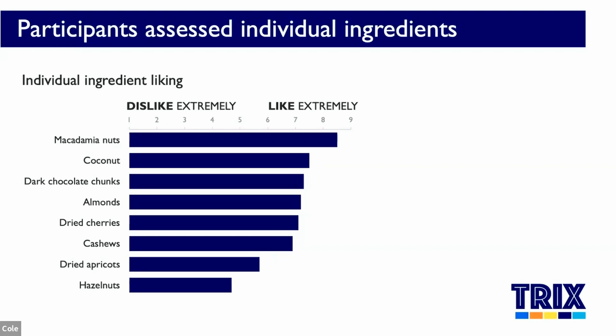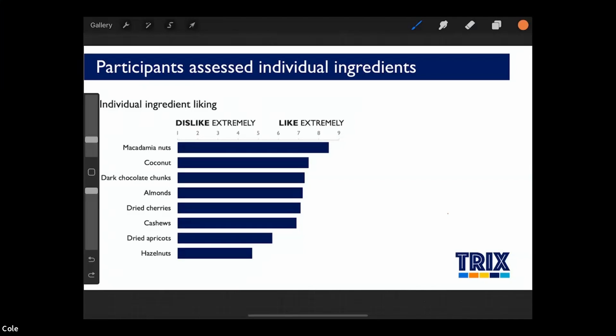Let's take a look at an example. Here's a graph that I want to present. I'm going to switch views so I can draw on it as I talk. If I were going to speak through this to an audience, I would start by explaining what we're looking at. This is data from a taste test — liking for individual ingredients, rated on a nine-point hedonic scale. Now that I talk through it this way, I recognize I may not even want to show the data at the onset. I can just show the bones, the skeleton of the graph, so my audience can't jump in and start directing their own takeaways.